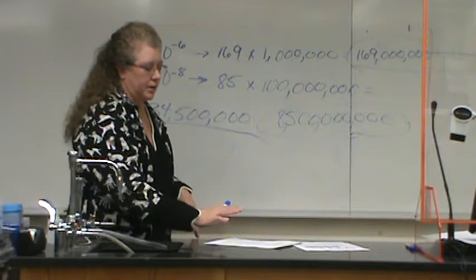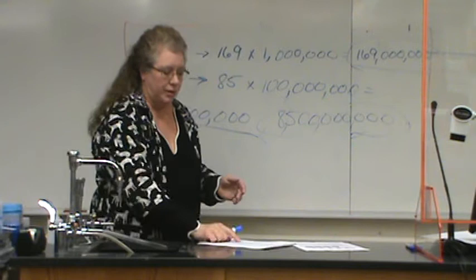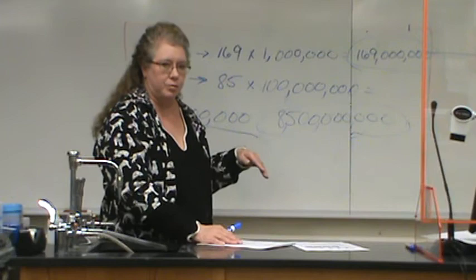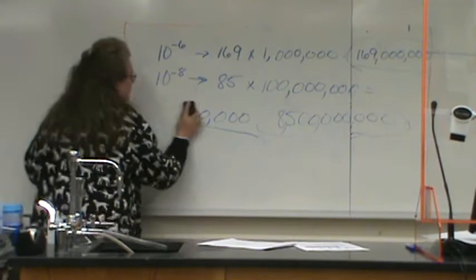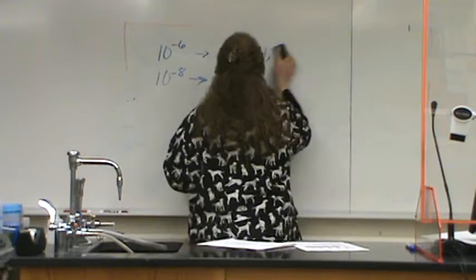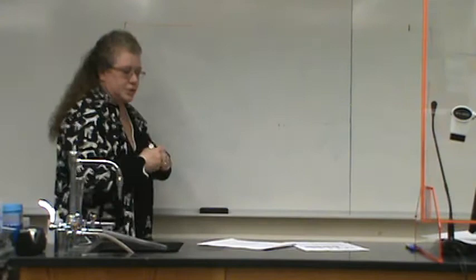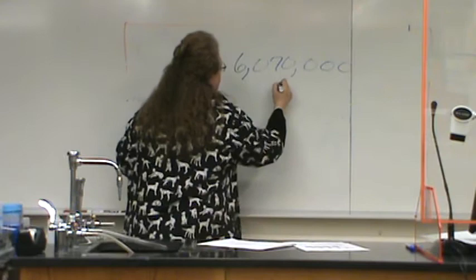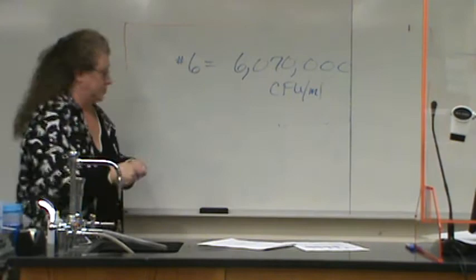For question six, I'll point out that the third plate only has 20 colonies — you cannot count that plate, so throw it out. From there you should be able to follow the same process to solve that problem. The answer for that question is 6,070,000 CFUs per milliliter.